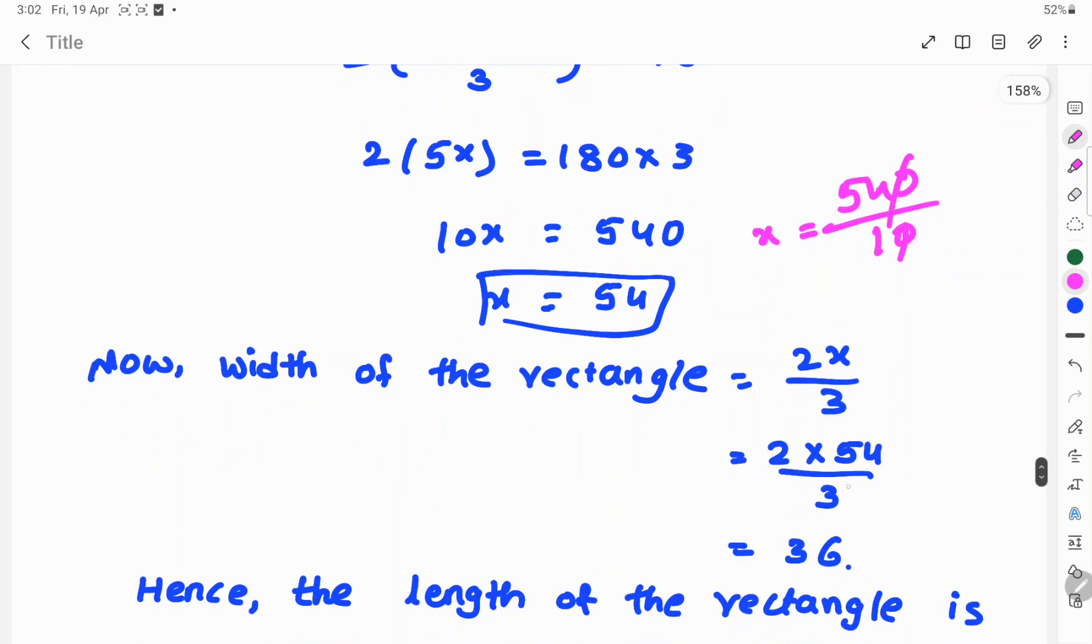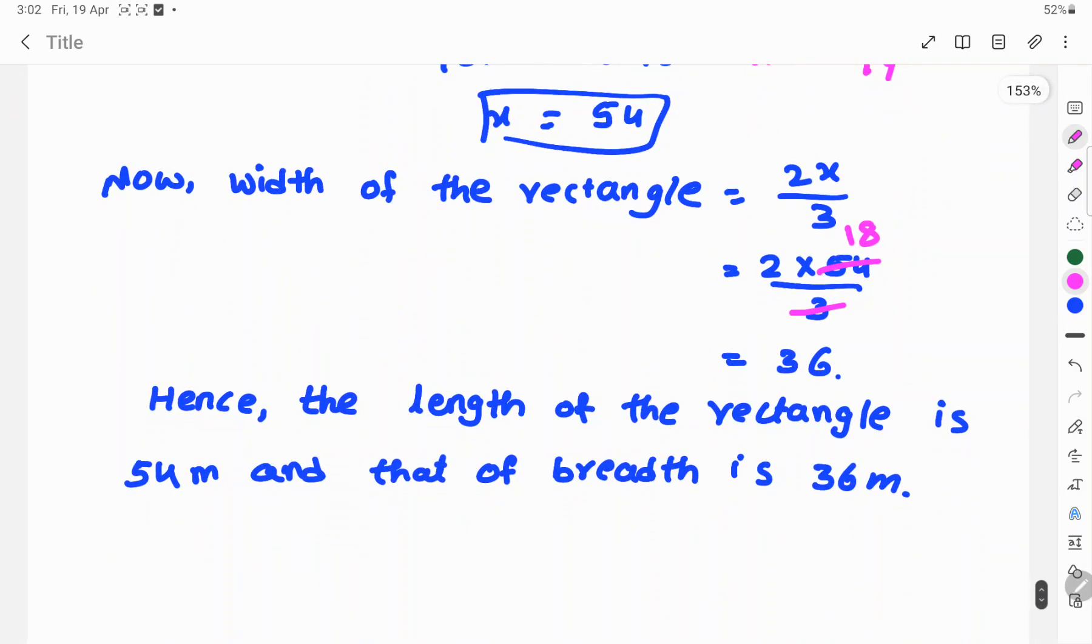So, 2 into 54 by 3. 3 cancels 54. How many times? 18 times. So, 2 into 18 is 36. Width of the rectangle is 36.